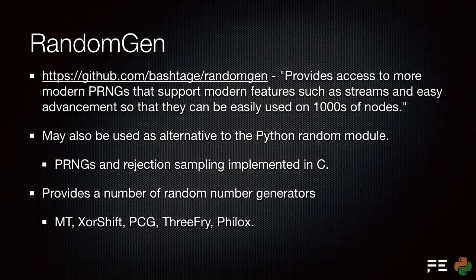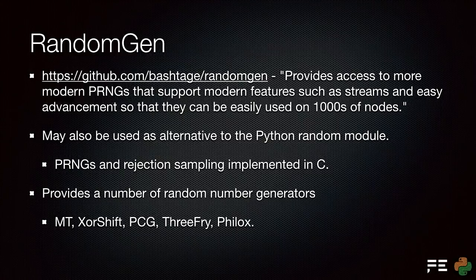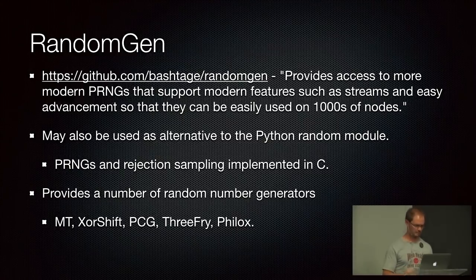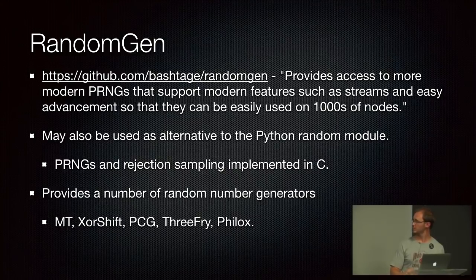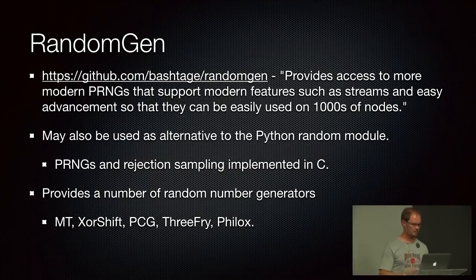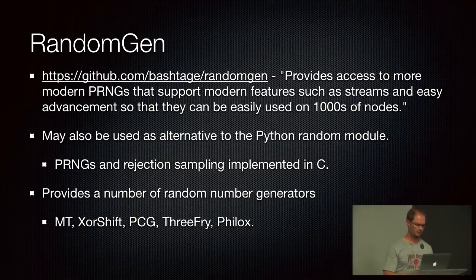And some quick details on randomgen. The random generators are implemented in C, so it's a Cython extension. And they have a whole number of generators which include the mersenne twister, xorshift, PCG, PCG64, DSFMT, these last two I don't know. I don't know if anyone has worked with DSFMT and MT19937. Does anyone know these?